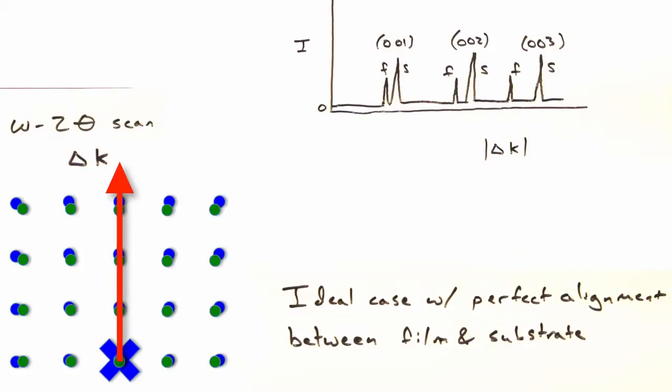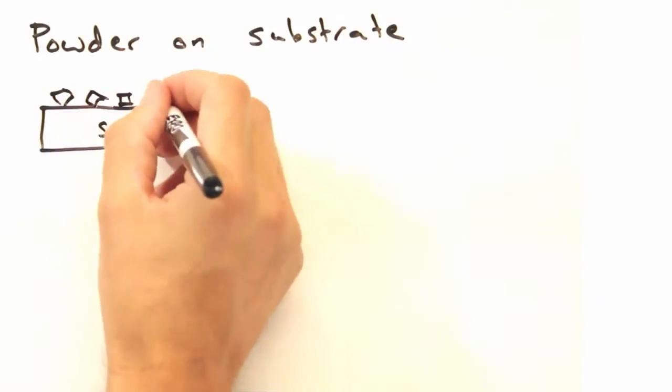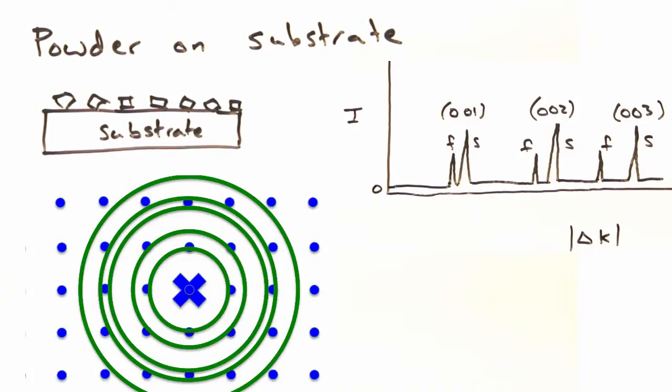On the other hand, if we have a completely disordered system like a powder on our substrate, our reciprocal space for the film would be made of concentric spheres, and the intensity spectrum would have extra peaks.